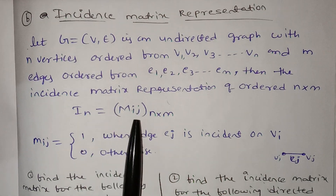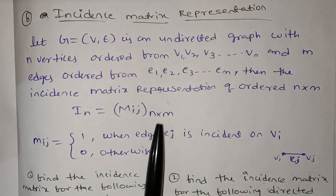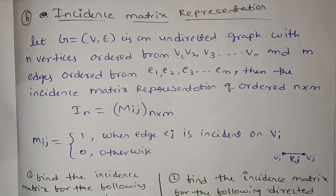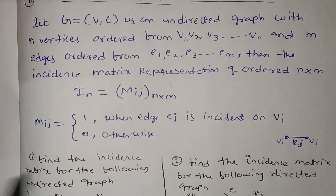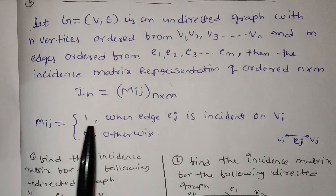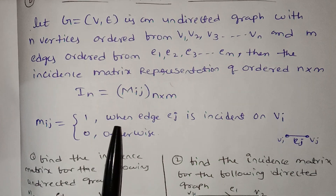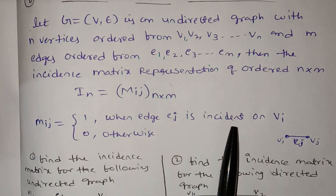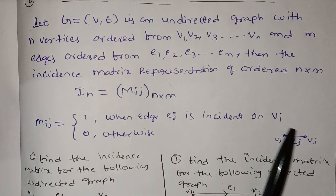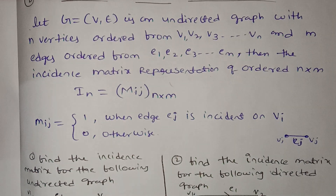This is the incidence matrix. The matrix entry Mij equals 1 when edge ej is incident on vertex Vi. We have vertices V1 and edges E1, E2, E3, and so on.